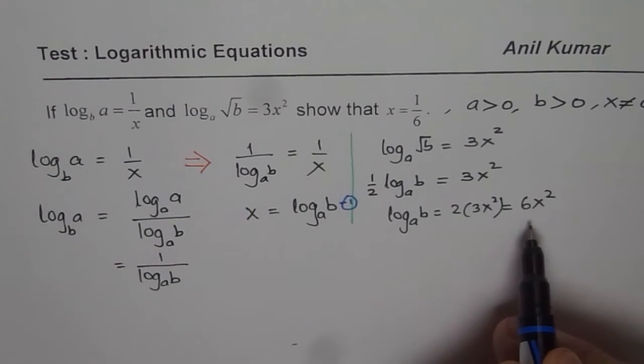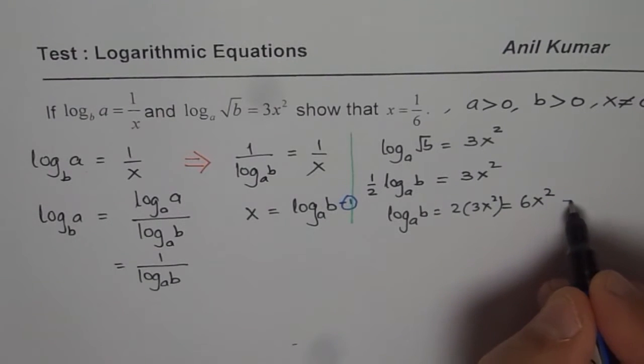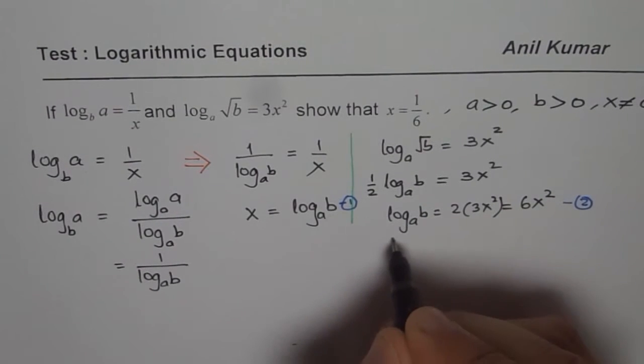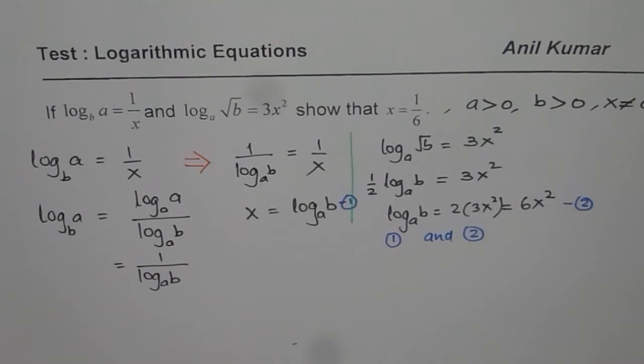And I have log a of b equals 6x square. So I get one equation in x. So let us say this is my equation number 2. So when I combine equation 1 and equation 2, what do I get?